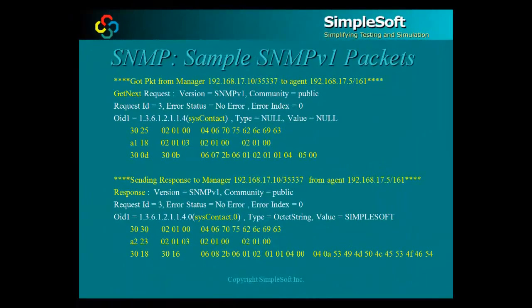A sample packet exchange showing the different fields of the SNMP v1 packet and the corresponding hex values for the encoded message on the wire are shown. The manager is sending a get-next request for SysContact to the agent, and the agent is responding with the value of SysContact.0, which is lexicographically the next variable to SysContact.